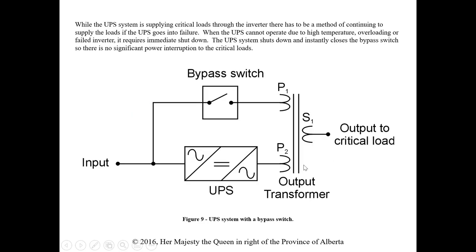There must always be a method of continuing to supply loads if the UPS goes into failure. UPS systems have electronic components that could fail at any time. When the UPS cannot be operated due to high temperature, overloading, or a failed inverter, it requires immediate shutdown. The UPS system shuts down and instantly closes a bypass switch so there is no significant power interruption to the critical loads.